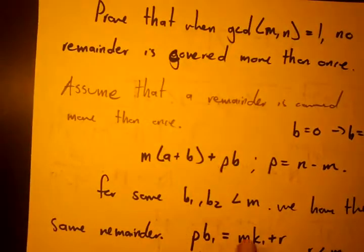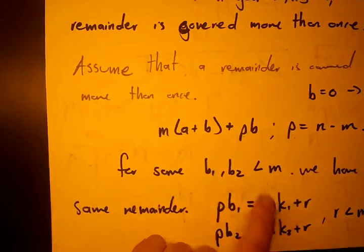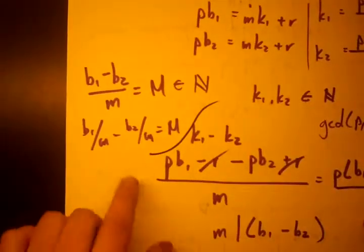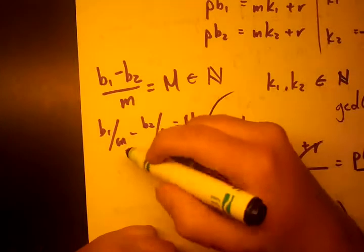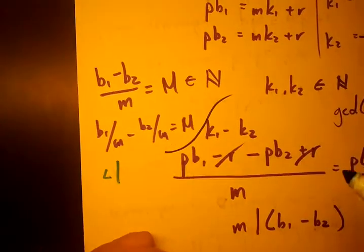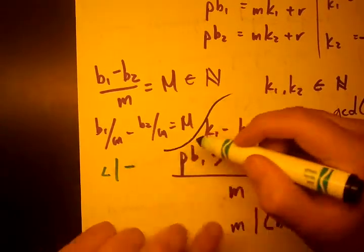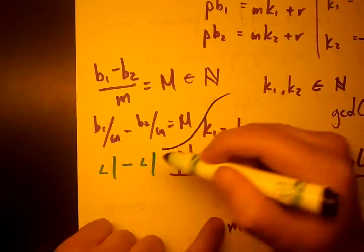What did we state before? Remember here we said B1 and B2 are less than M. If these are both less than M, then B1 over M is some fraction that's going to be less than 1. And again, B2 over M is some fraction that's less than 1.